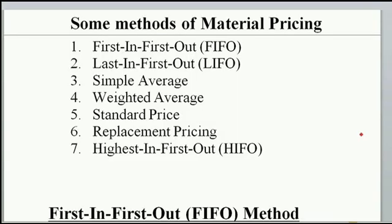We have methods that can be used to price materials to production. The methods we can use to price the material that we issue to production — the first one is the First In First Out method, which in short we call FIFO.